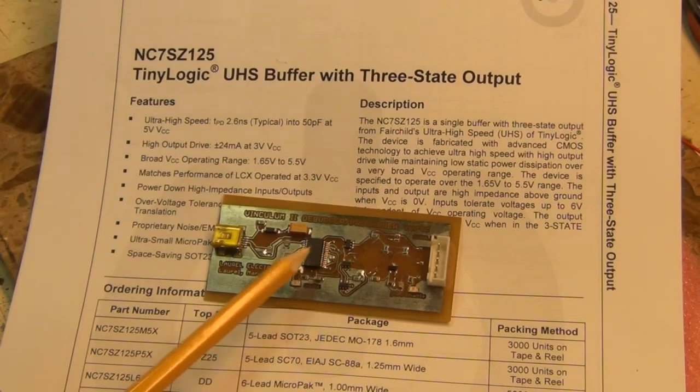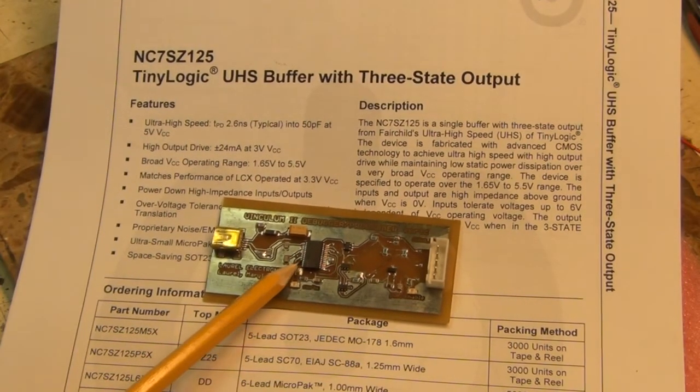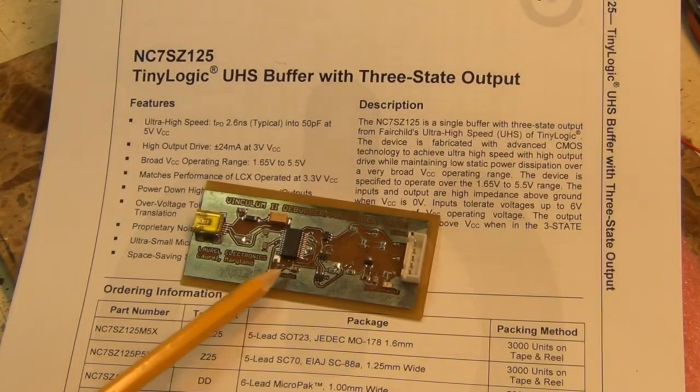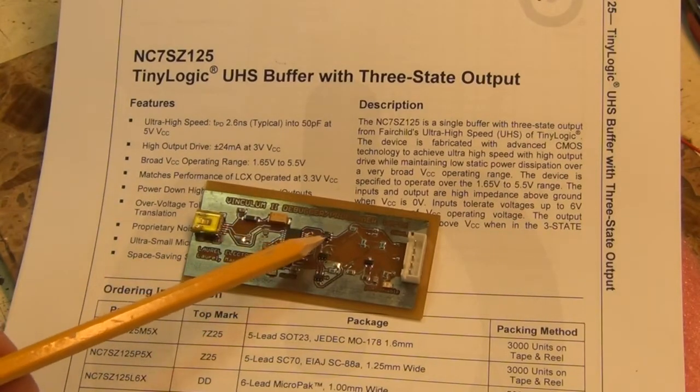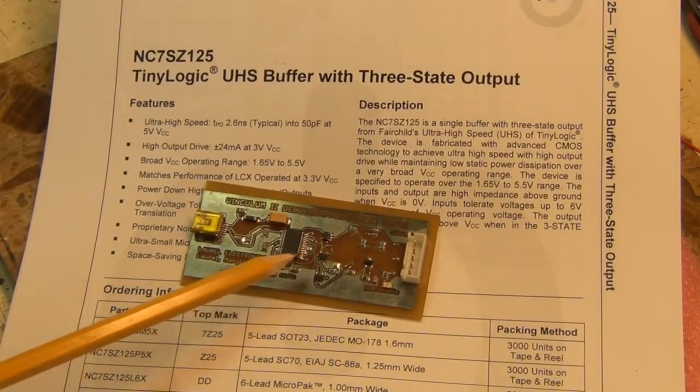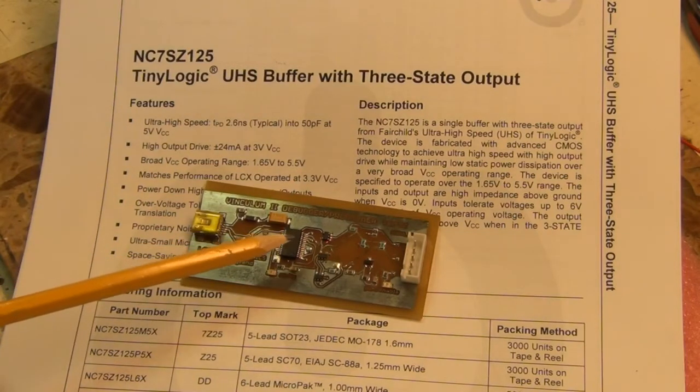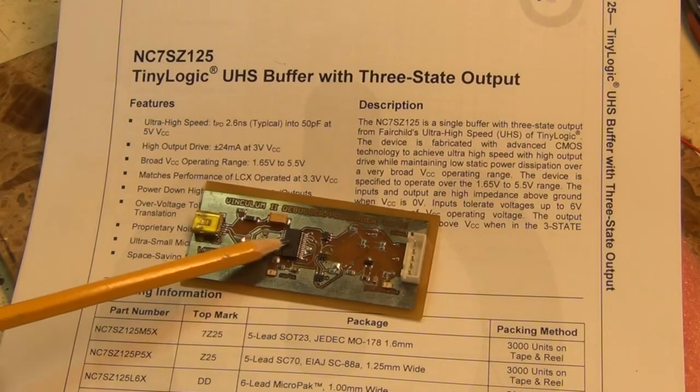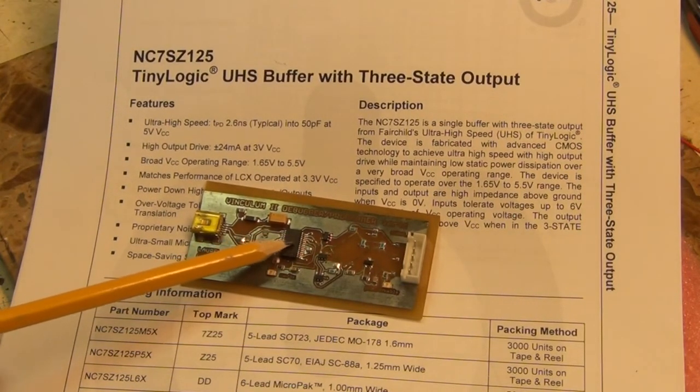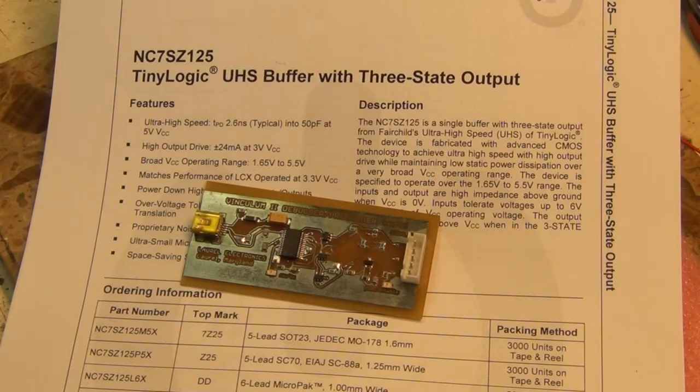And on it is an FTDI-232-RL, and I also used three small chips here that are ultra high-speed buffer gates that I used to combine the receive and transmit signals out of the FT-232-RL to make a half-duplex signal to program the Venculum 2 chip.